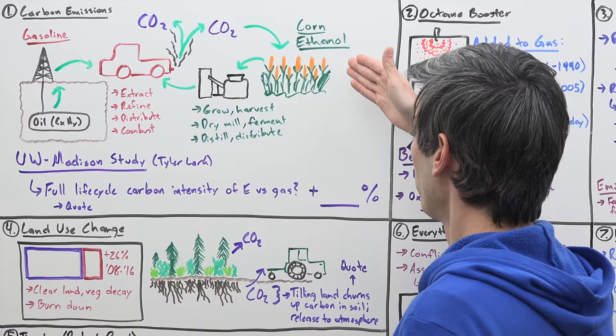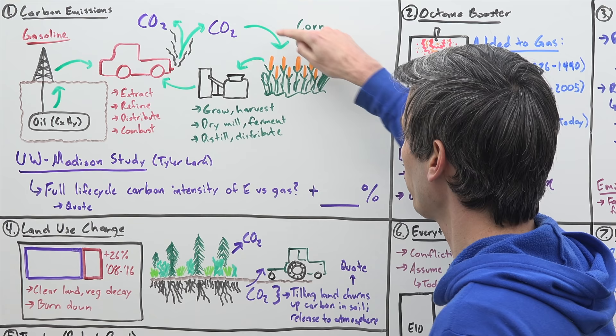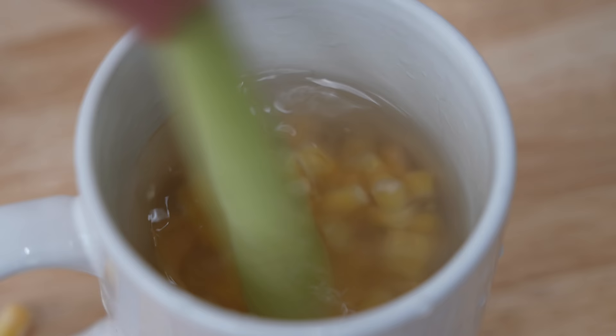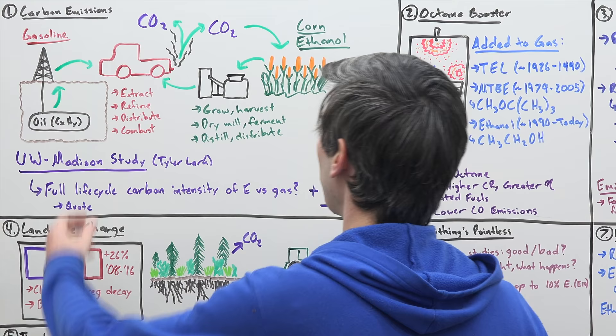Versus ethanol, corn-based ethanol, you're growing this corn. To grow that corn, you take carbon from out of the air, CO2 from the air, to grow that corn. You then harvest it, you dry mill it, you ferment it, it goes through a process, you turn that into ethanol.